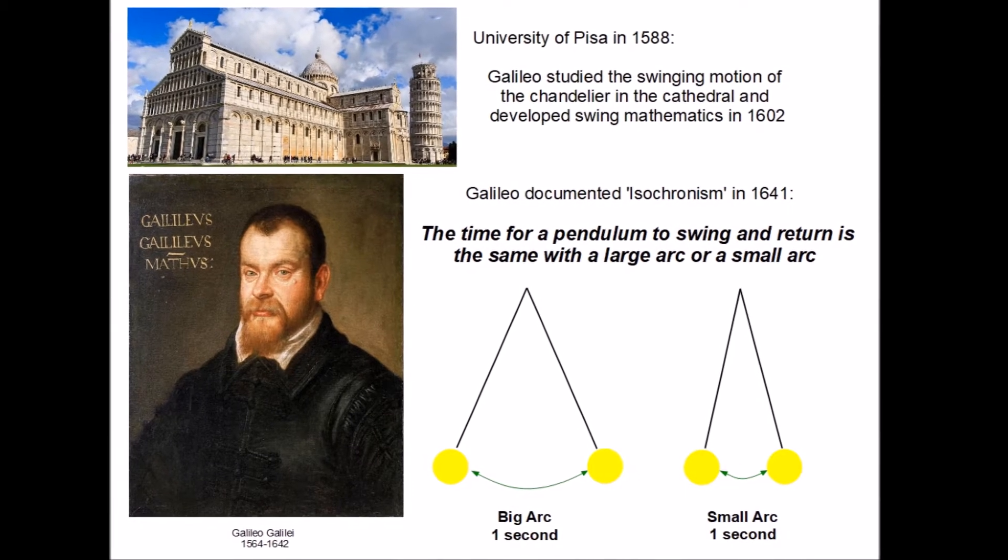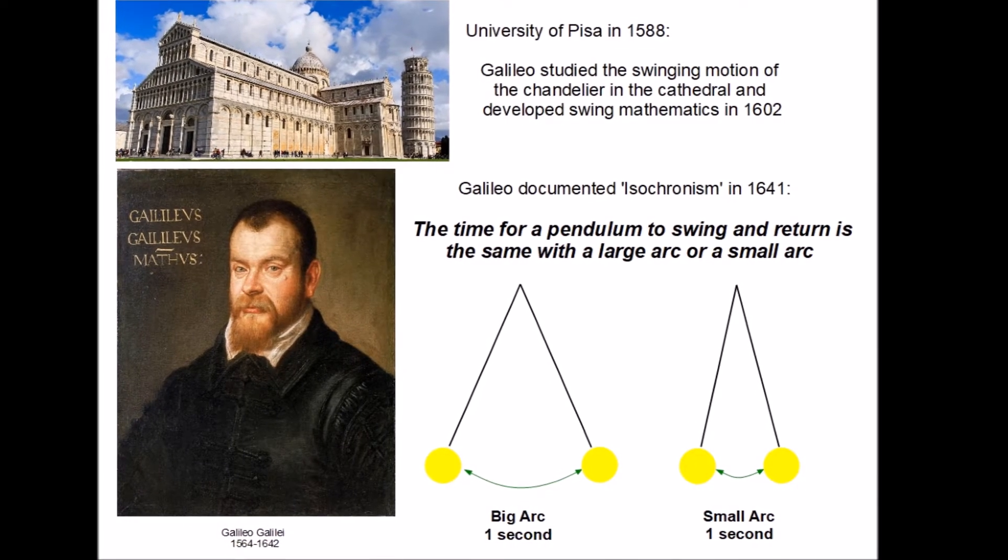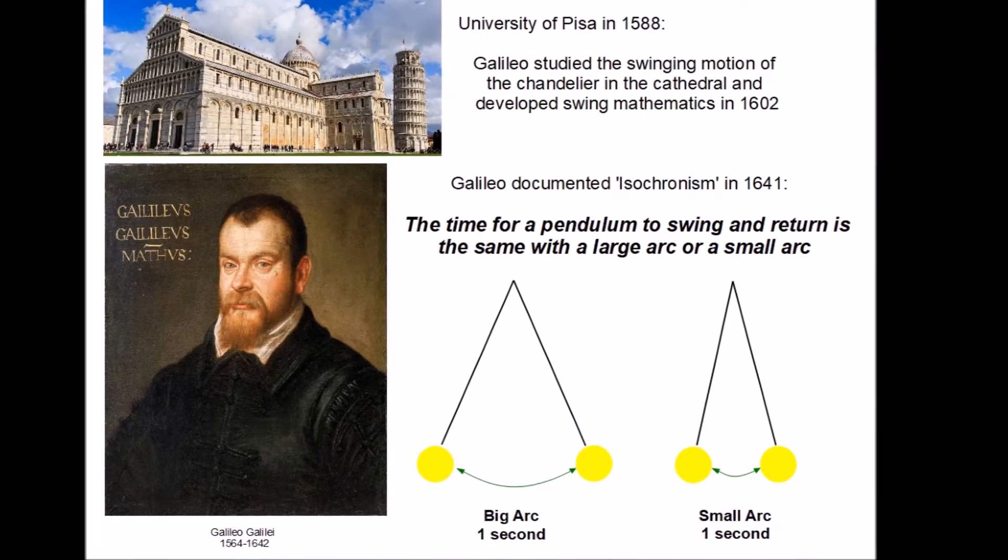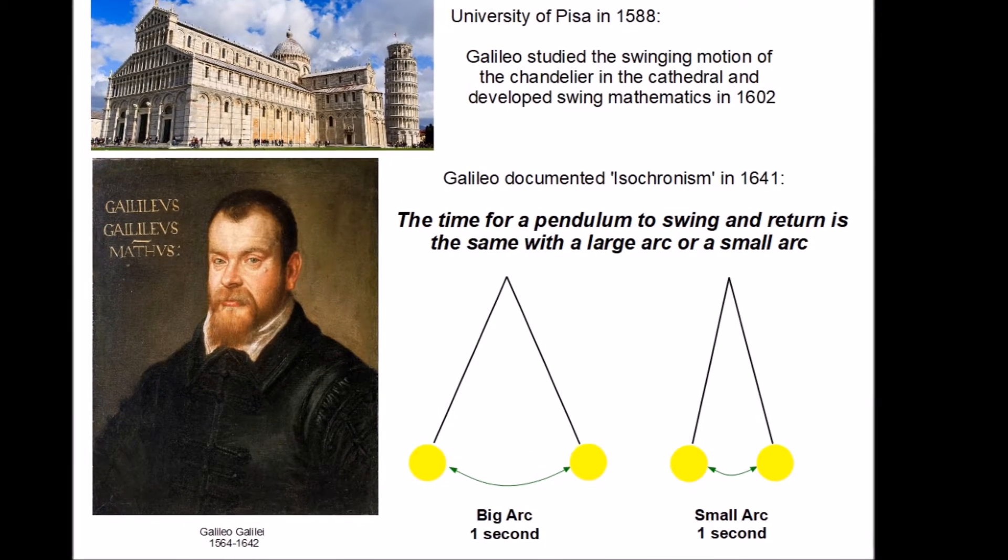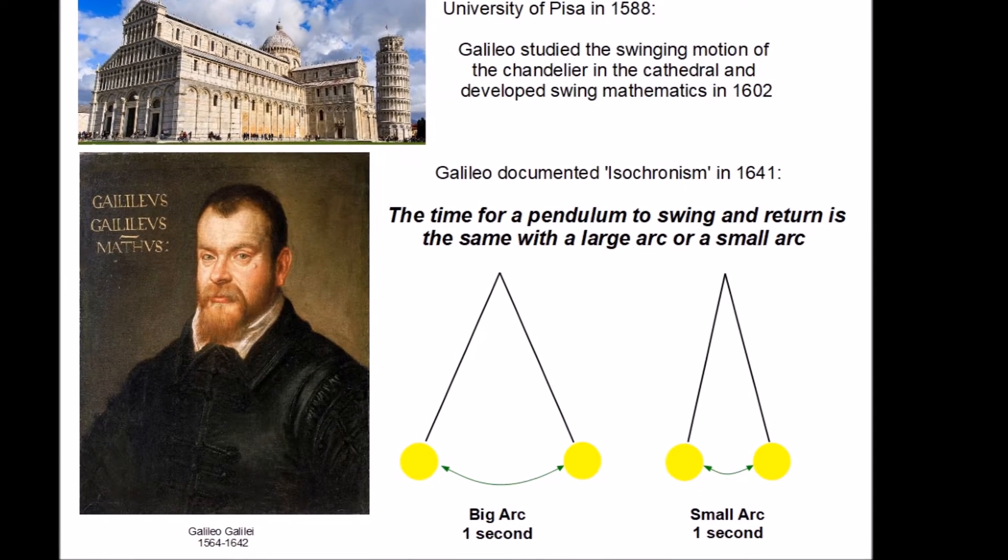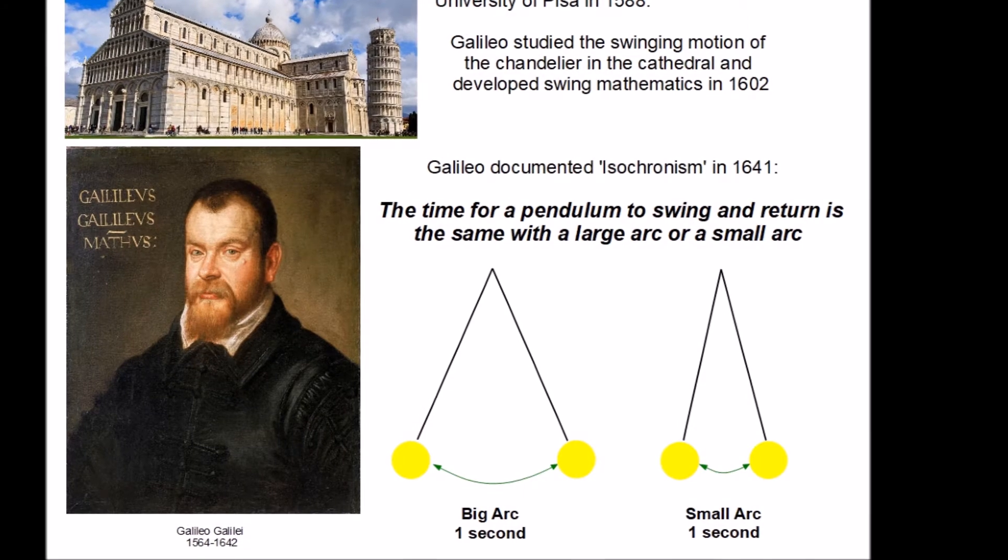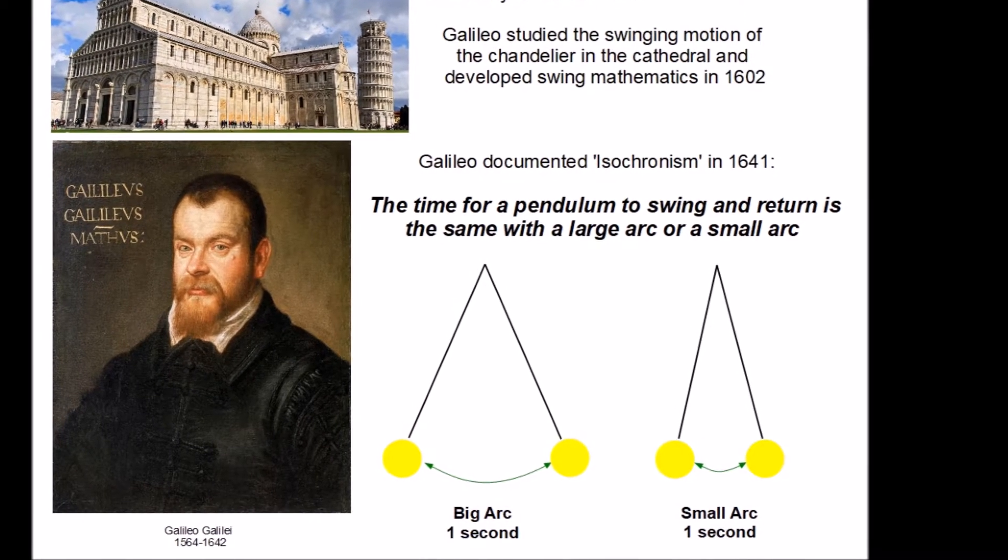The pendulum's use in time regulation began with Galileo in the late 1500s and early 1600s. As a student in the University of Pisa, he first noticed the swing of a chandelier in the rhythmic motion and the consistency that it had.